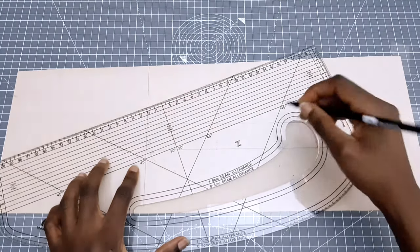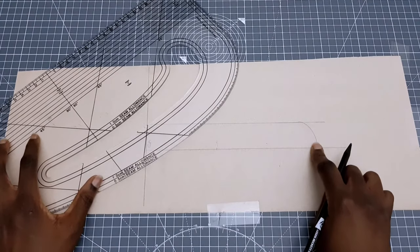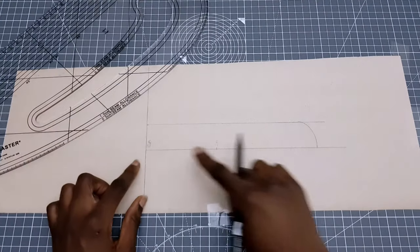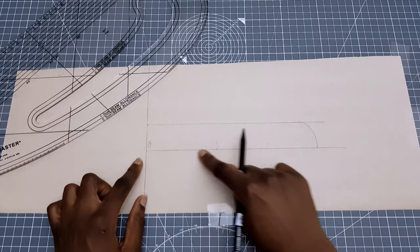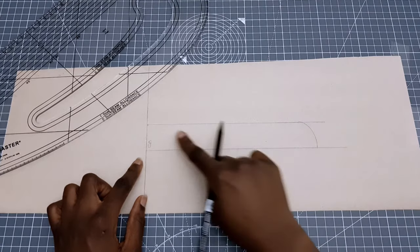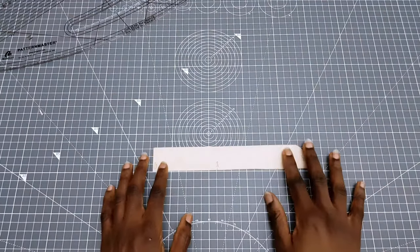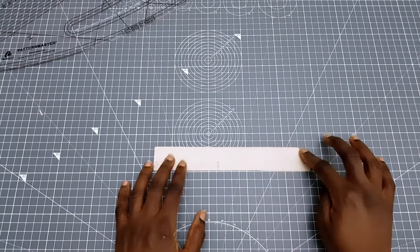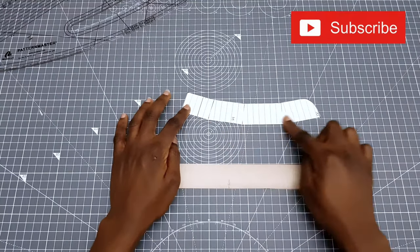However if we cut this pattern this way the collar will not fit properly along the neckline. This is because the neckline is a very deep curve and if we leave it like this the collar will stand out as opposed to standing close to the neckline. So to fix this we're going to curve the collar. To do this we would need to cut out the collar pattern first and then shape it.